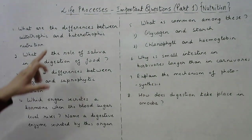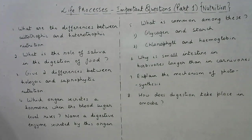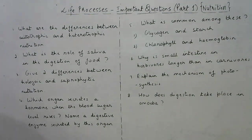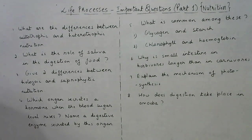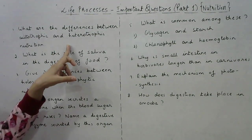First question: what are the differences between autotrophic and heterotrophic nutrition? Autotrophic nutrition is the mode of nutrition in which organisms make their food from inorganic material, whereas in heterotrophic nutrition, they depend on other organisms for their food. You can also mention the subtypes — autotrophic nutrition has no further subtypes, whereas heterotrophic nutrition has three further subtypes. The third point of difference will be examples for autotrophic and heterotrophic nutrition. So there can be three points in this answer.